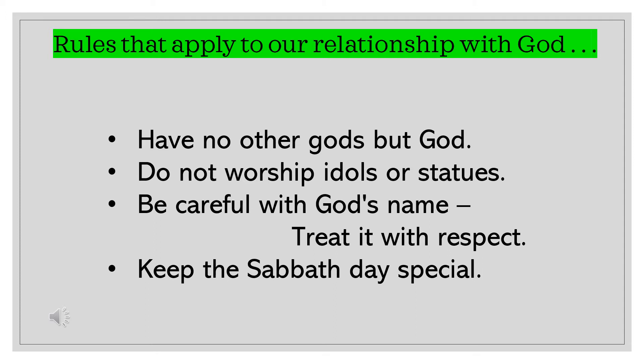The first four commandments deal with our relationship with God. The first is: have no other gods before me. This was especially important at the time because the Israelites were surrounded by countries that worshiped false gods — the sun, the moon, the stars. Jehovah, Yahweh, is the one true God. The second is: do not worship idols or statues — we have an infinite God and it's impossible to put him in a wooden or stone statue. The third is: be careful with God's name — treat it with respect, don't use it to swear, just as you wouldn't want someone to make fun of your own name.